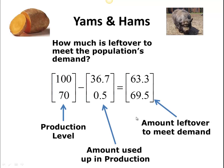You may recall from what we had, we have a production level of 170 and 70, so our first row here is all about yams, our second row is about pigs. And so we had a production level of 100 yams and 70 pigs, but while growing those yams, the farmer ate some yams, and also while growing the pigs, pigs ate those yams. And so this 36.7 we calculated in the previous video.